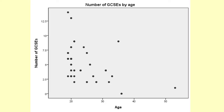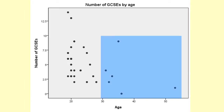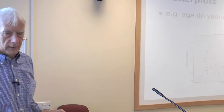In this case there's not a very strong relationship. You might say there's a beginning of a trend — that younger people got more GCSEs and older people got fewer — but it's not a very strong or clear picture at all. Fortunately, they're not all like that.